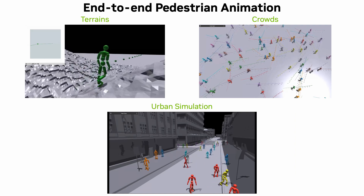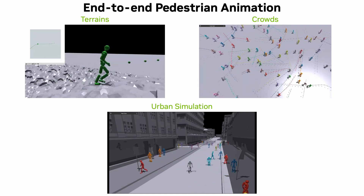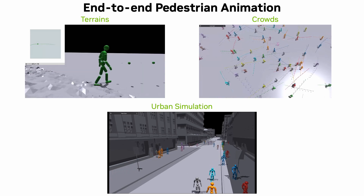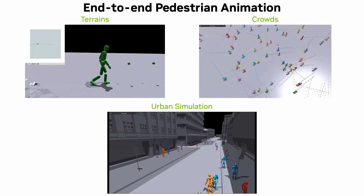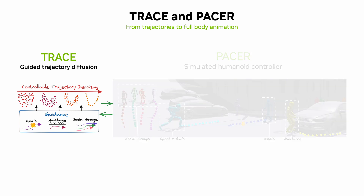Together, Trace and Pacer enable simulated pedestrians that can handle variable terrains, dense crowds, and urban street settings. We'll briefly look at how each of these components work, but for full details please see the main paper. Let's start with Trace, the trajectory diffusion model.